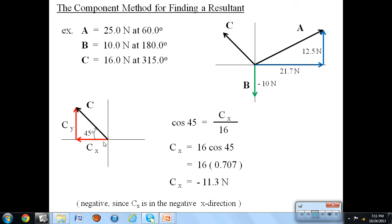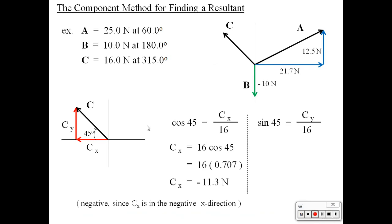That's something you have to pay attention to. Just assign a negative sign to it. Your calculator will say positive 11.3, but you just put a negative sign on there if it points to the left. To get C sub Y, which is the opposite side, we're going to use the sine function. Sine of 45 is C sub Y over the hypotenuse, 16. Multiply the 16 across, and it turns out to be 11.3. This time positive because it's pointing in the positive Y direction.